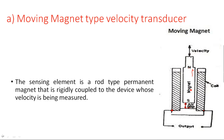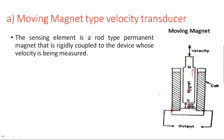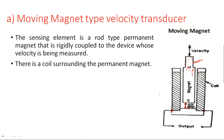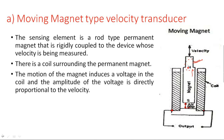The sensing element is a rod type of permanent magnet that is rigidly coupled to the device whose velocity is being measured. This rod type permanent magnet has north and south poles. When velocity is applied to the magnet, the resulting electrical voltage changes in the coil. There is a coil surrounding the permanent magnet, and the motion of the magnet induces a voltage in the coil. The amplitude of the voltage is directly proportional to velocity.